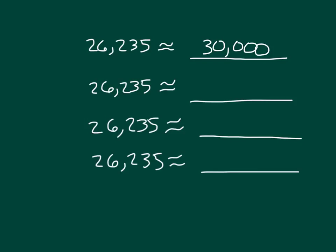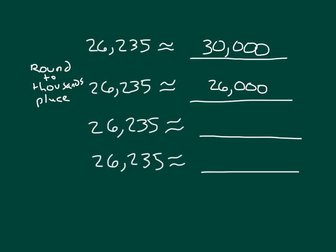For the next one, we're going to round instead to the thousands place — we might say round to the thousands place, or round to the nearest thousand. When we round to the nearest thousand, we have 6 here or 7 for the nearest thousand, giving us either 26,000 or 27,000. In this case it is 26,000, because the midway point is 26,500, and 26,235 is less than 26,500. So it's closer to 26,000.